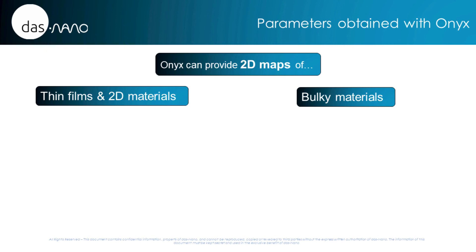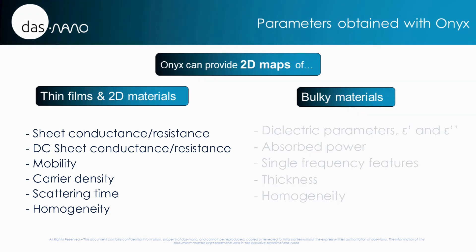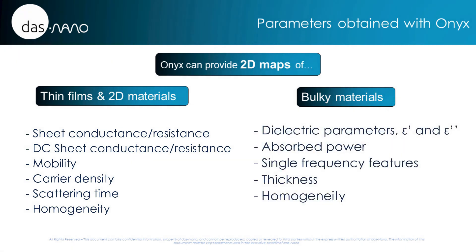The use of complex algorithms allows us to calculate parameters such as sheet resistivity and carrier mobility in thin films and novel 2D materials, or dielectric parameters and dimensions in bulky materials. A wide variety of materials can be fully characterized by a single tool.